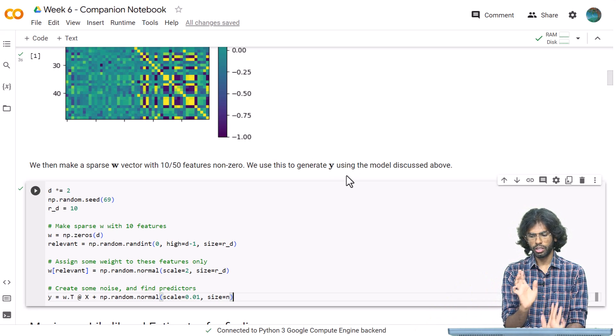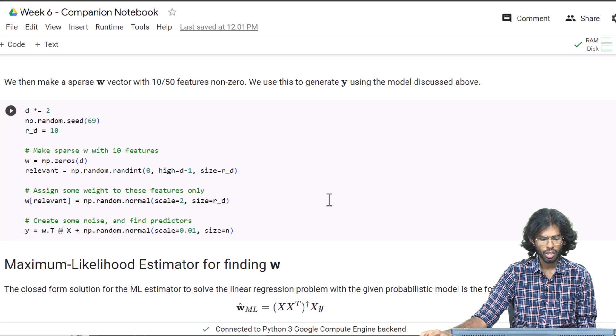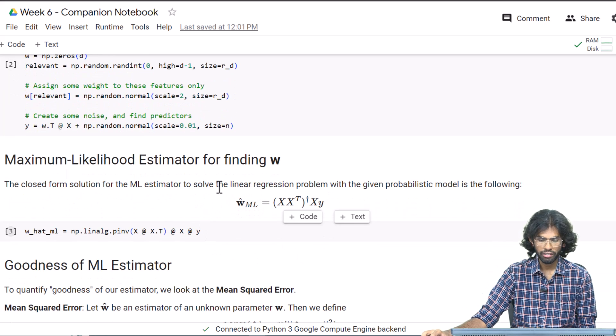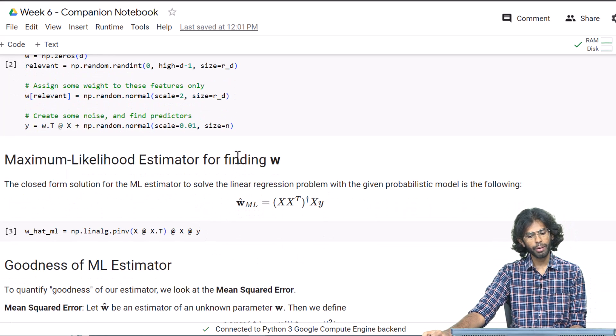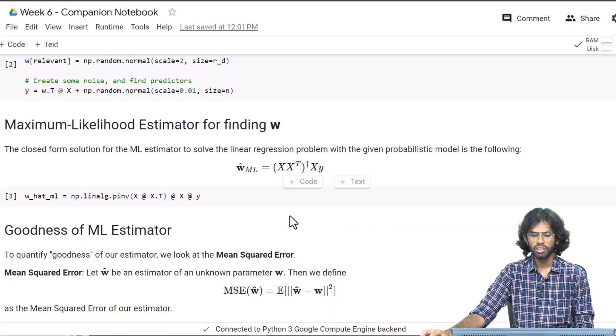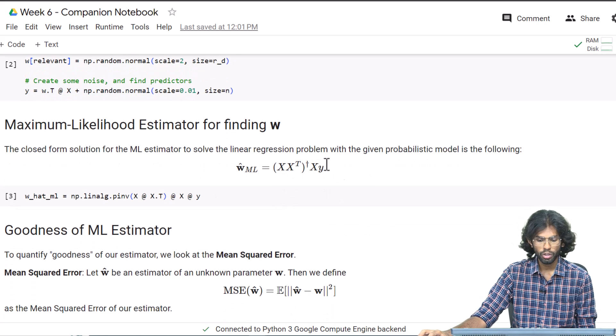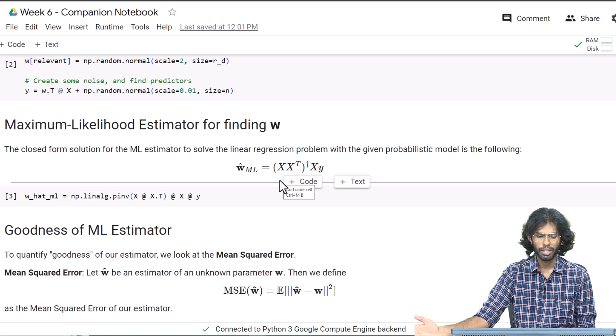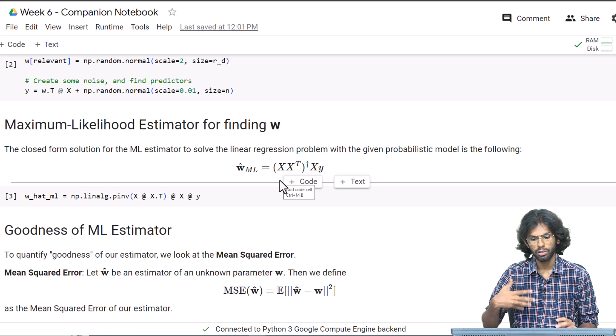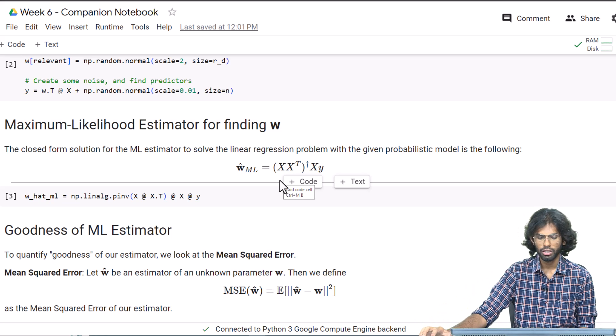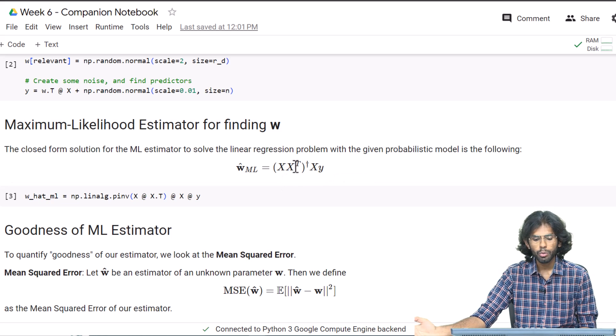Now our goal is to find what this w is. What was covered in Week 5 is the maximum likelihood estimation, and the maximum likelihood estimation closed-form solution is XX^T pseudo-inverse XY, which corresponds to the maximum likelihood estimate, also called the ordinary least squares estimate.